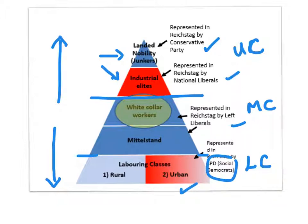Now the other thing to remember about the social pyramid is that power — both political power, which is having a say in the running of the country, and economic power, which is controlling the wealth of the country — lies at the top with the few, while the many at the bottom have relatively little power.